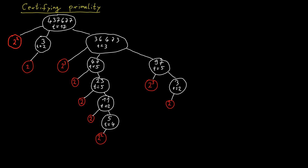Now remember that certificates need to be polynomial in the size of the input, so in this case the certificate needs to be polynomial in log s. We have to convince ourselves that the total information encoded in this tree is no more than some polynomial function of log s. We start by arguing that the tree does not have too many nodes. Observe that the value of a node in the tree is larger than the product of the values of its children, and therefore also larger than the product of all leaf nodes in its subtree.